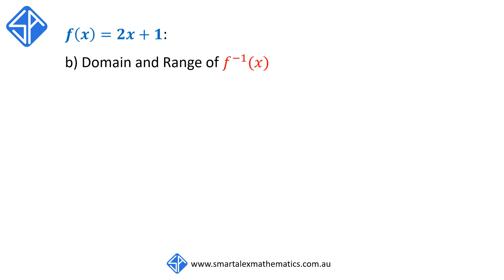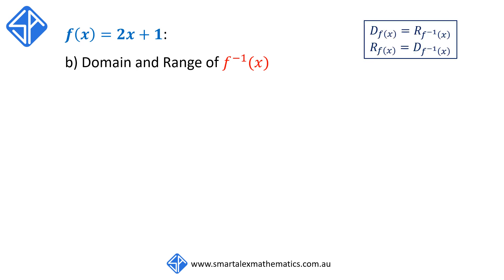To find the domain and range of the inverse function, we use the property that the domain and range of f of x and f to the negative 1 of x interchange. This means that the domain of f of x is equal to the range of f to the negative 1 of x, and the range of f of x is equal to the domain of f to the negative 1 of x.